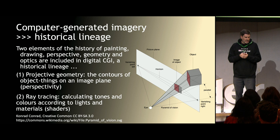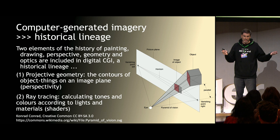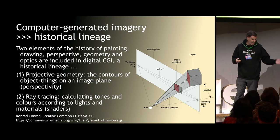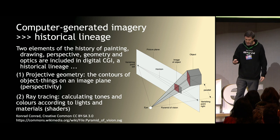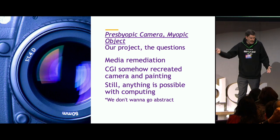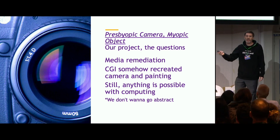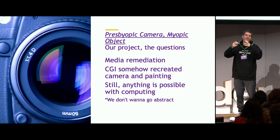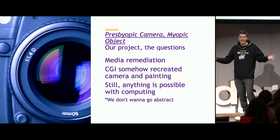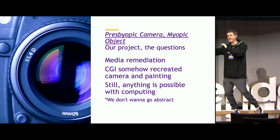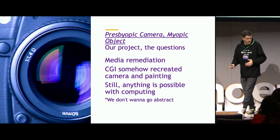Our starting hypothesis is that there are at least two elements of the history of painting embedded in any CGI software like Blender: projective geometry and ray tracing for all the shadings. So what do we do with that? Our project's question is based on media remediation — the idea that often a new technology will emulate part of the former one. I think photorealism is the best example: to make a real CGI image, it should look like an old photographic Polaroid. So CGI somehow recreated camera and painting.